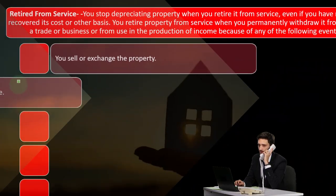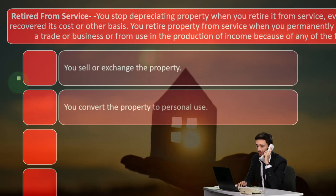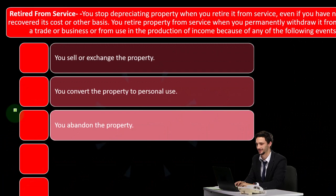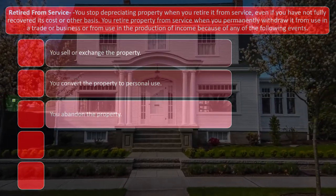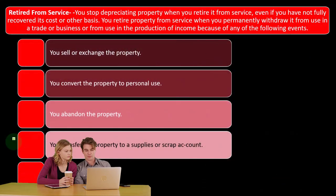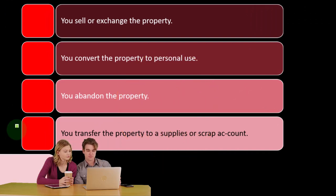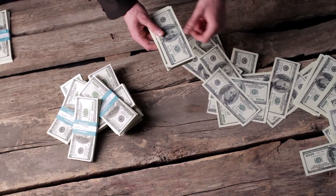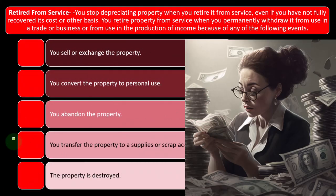You retire property when you sell or exchange it, convert it to personal use, abandon it — for example, walking away from real estate or abandoning a forklift — transfer it to a supplies or scrap account, meaning it's no longer a piece of equipment but just scrap metal, or when the property is destroyed. These are all similar to a sales-type transaction where you received no money, so you may have a loss. You don't really lose that adjusted basis — you still get some benefit from it.